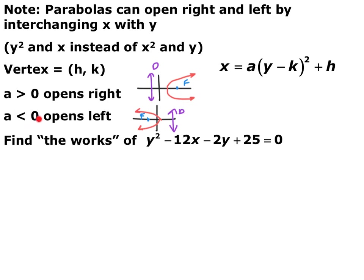If a is negative, it opens to the left, so the focus is inside the parabola to the left of the vertex, and the directrix is a vertical line to the right of the vertex. We can do the exact same steps as before, but now with a y-squared parabola. Go ahead and pause the video and try the same thing with this equation.